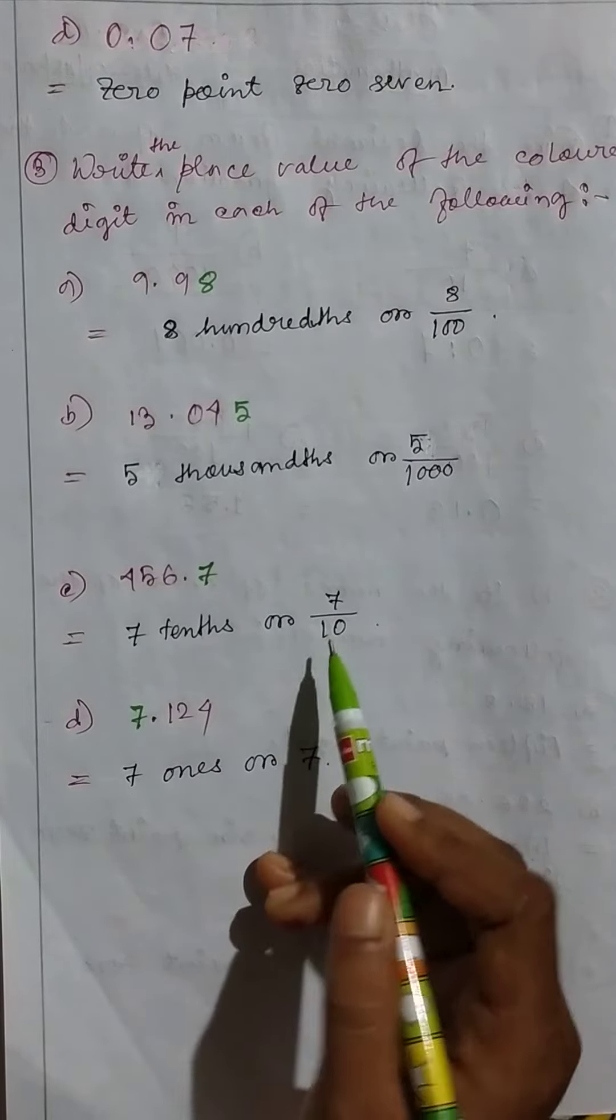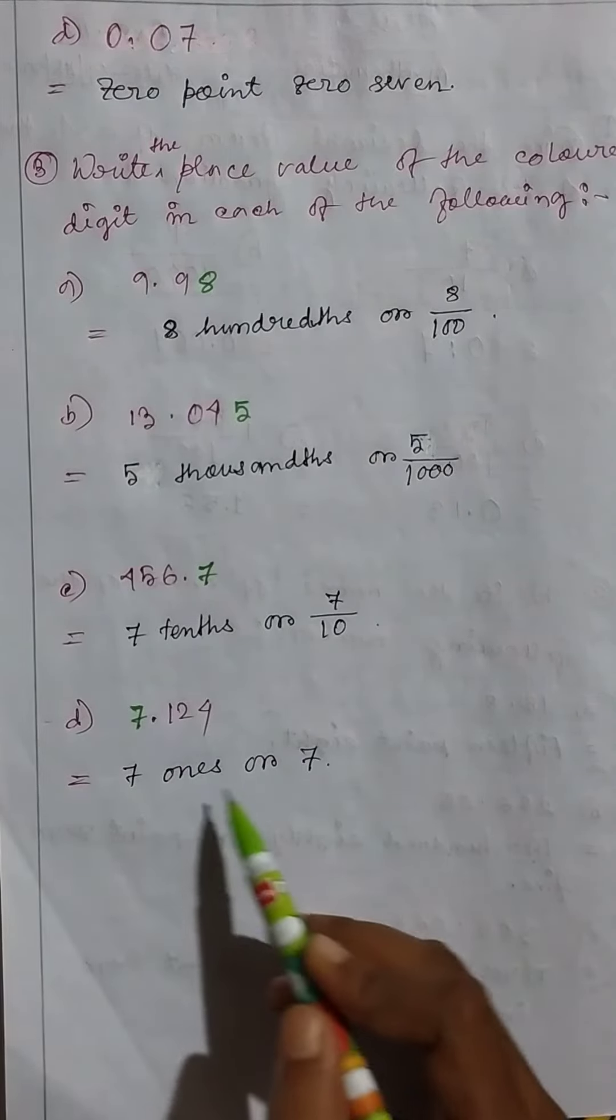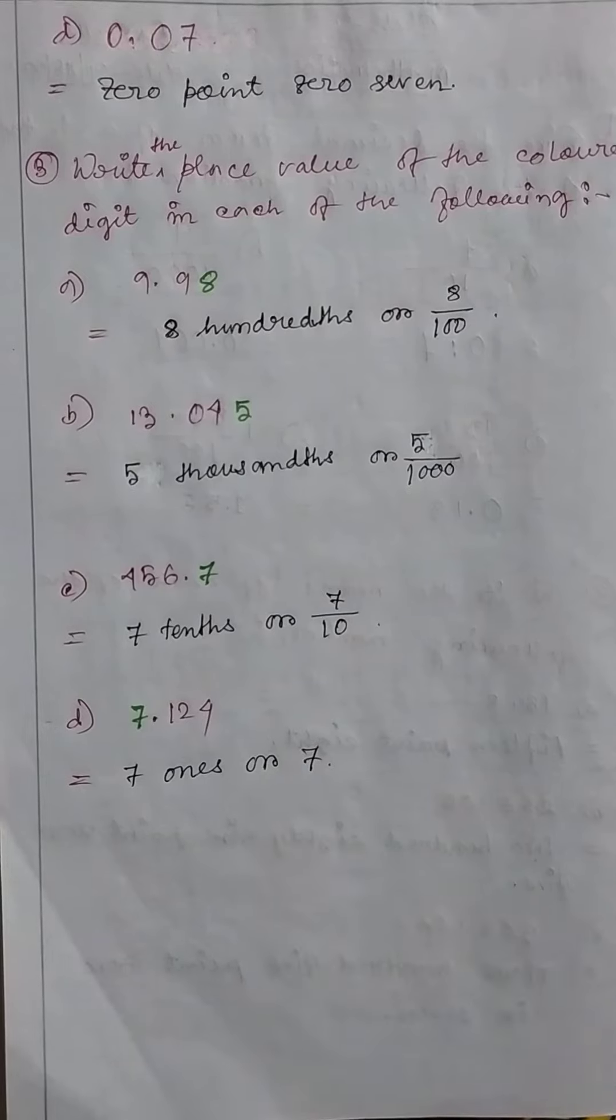Then seven point one two four, so seven ones or seven. Okay, thank you.